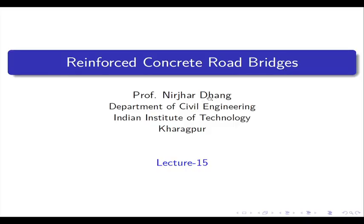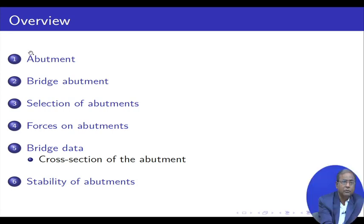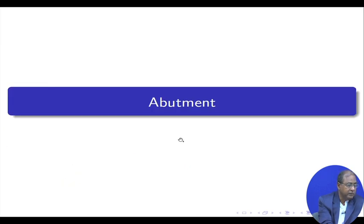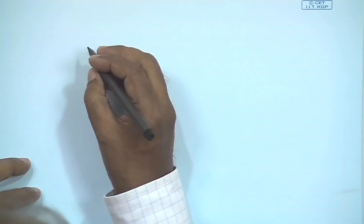Coming to this one here, we are considering reinforced concrete road bridges — continuing that, Section 15. We are mainly considering the abutment, specifically the selection of abutments. We have chosen this topic to give an idea of how we choose the geometry of the rest of the things. Our objective is mainly the superstructure in this particular case.